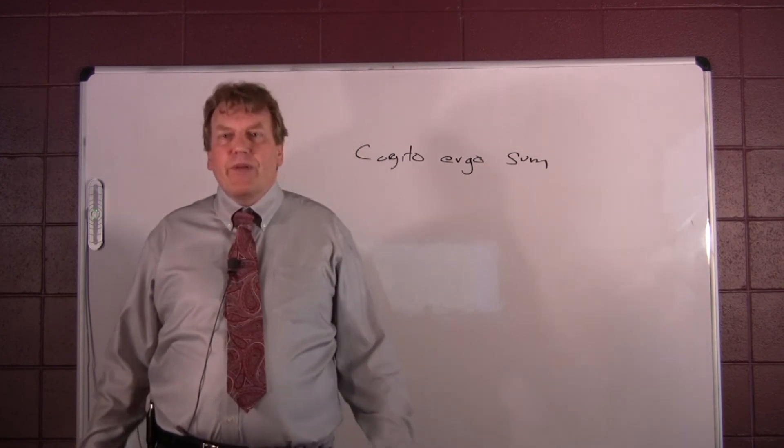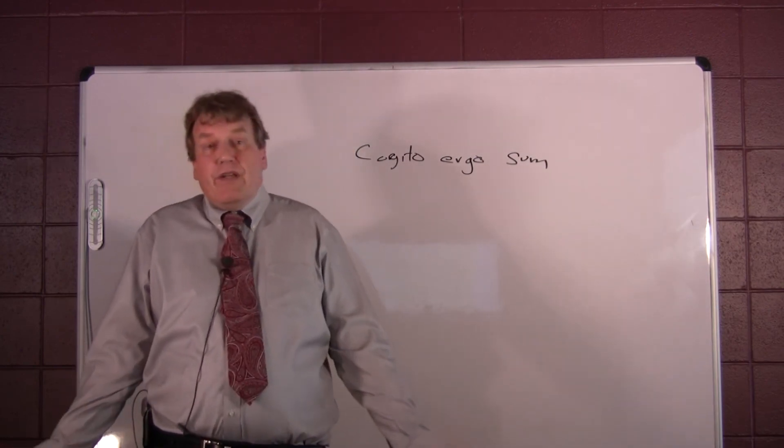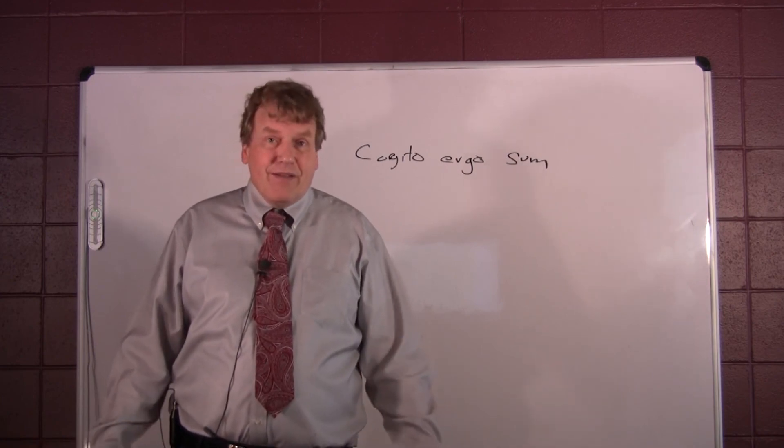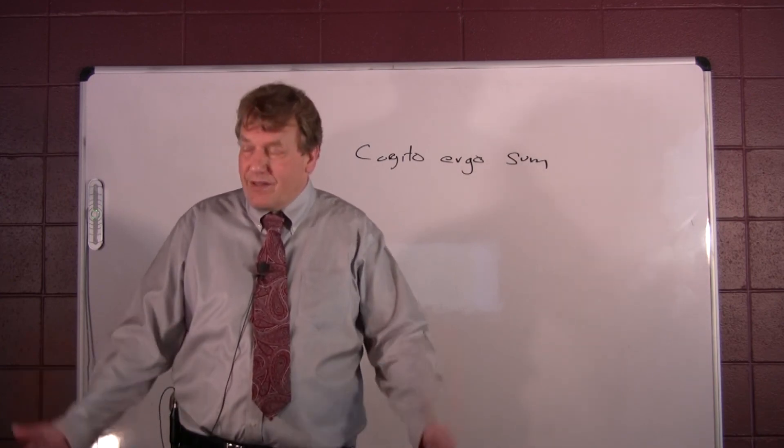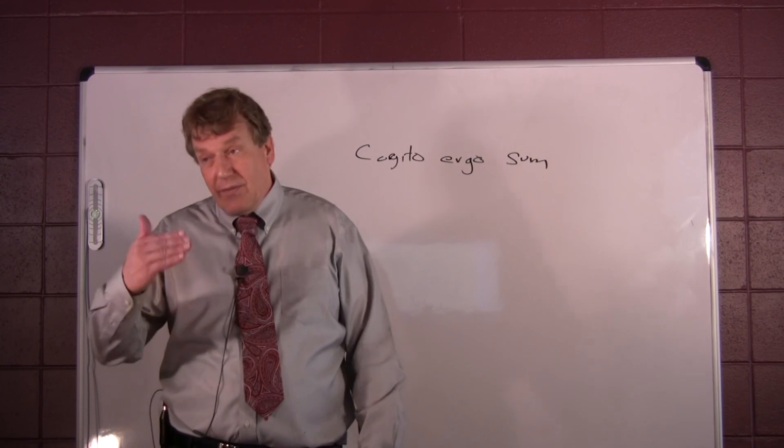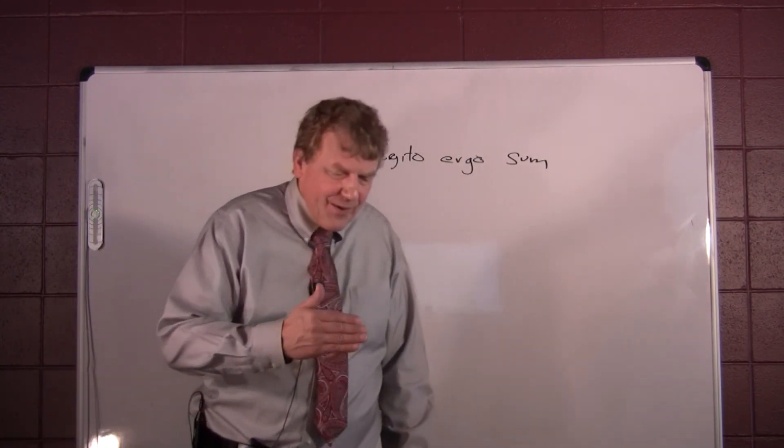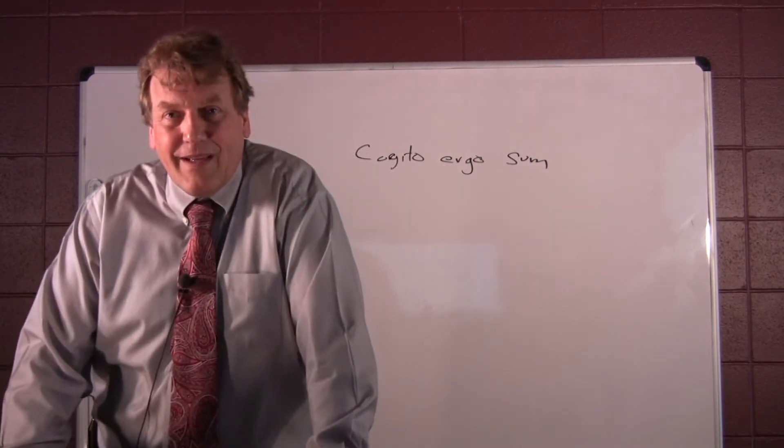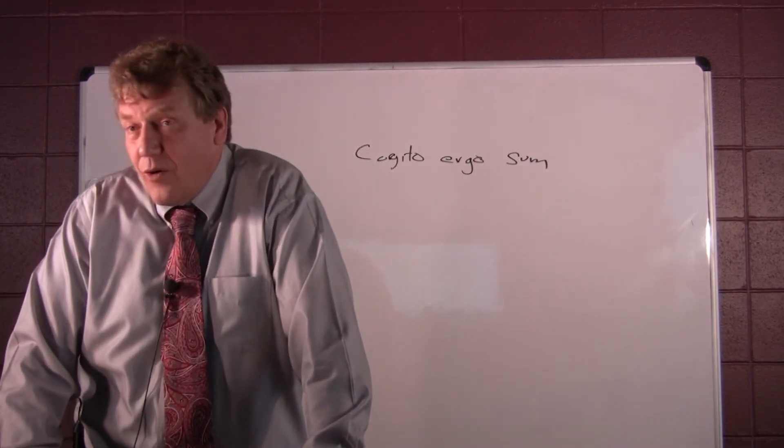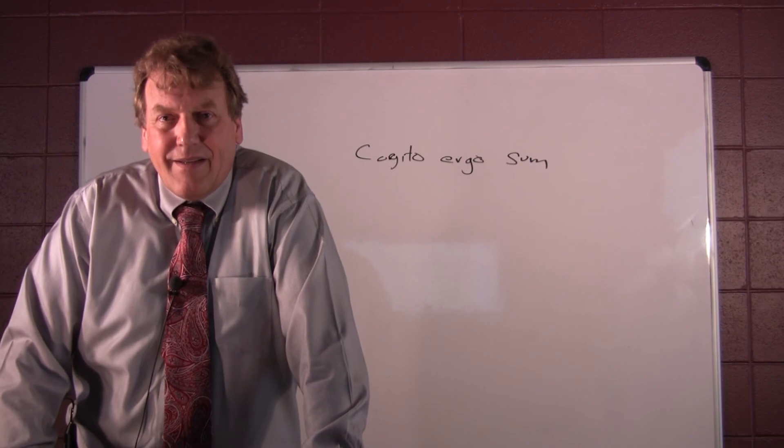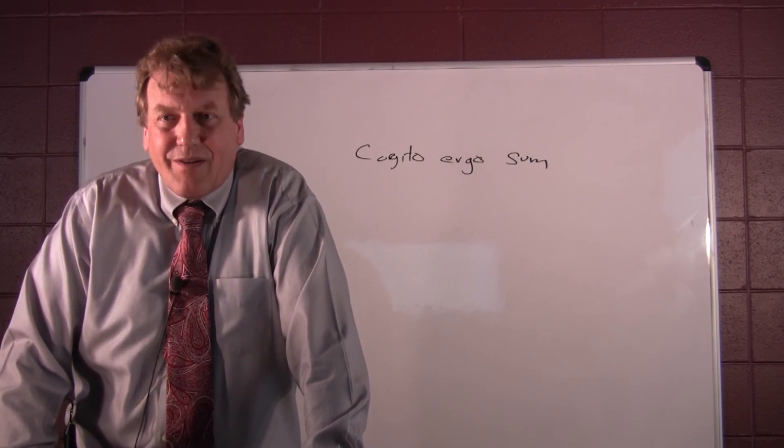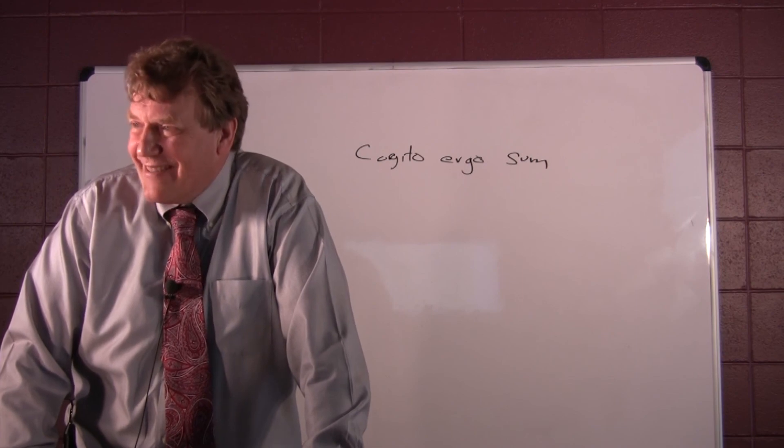Could one have been created to be mistaken, even if one clearly and distinctly apprehends something and one's will is convicted? That's a deeper question. Is it still possible, even though you can't doubt it, is it still at least logically possible that one is still mistaken? And here now, Descartes must ask the question of whether there is a God.